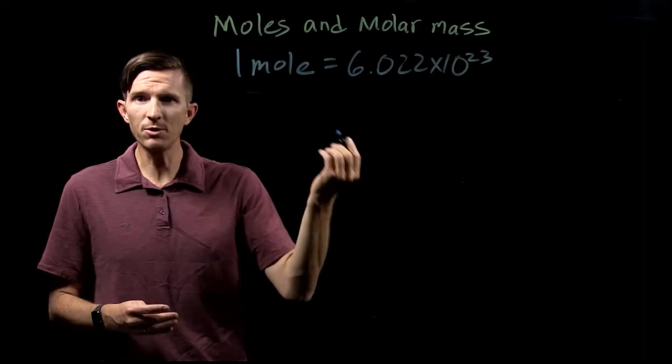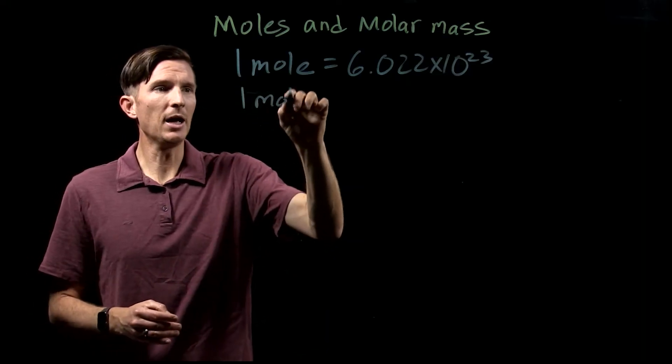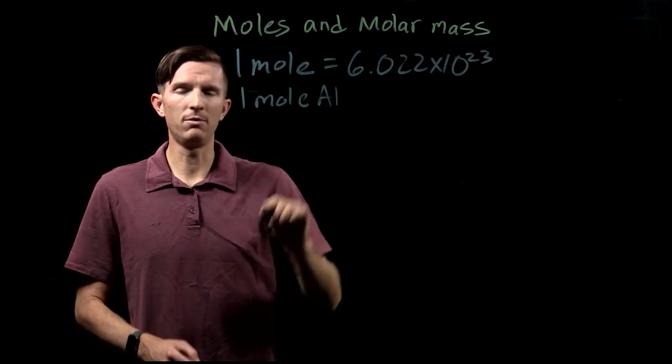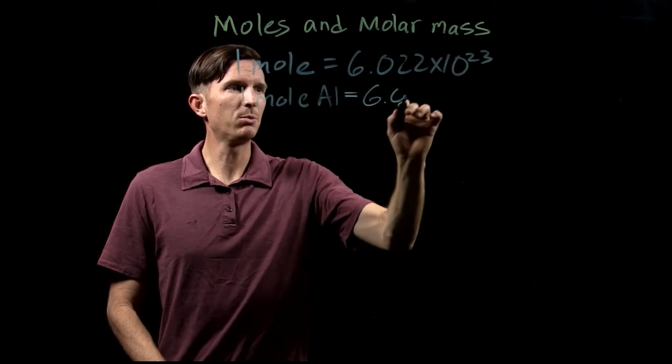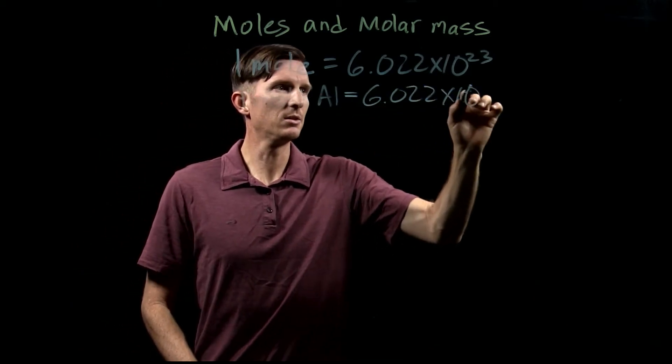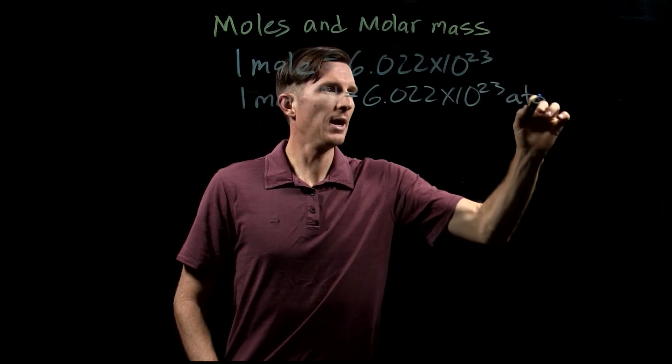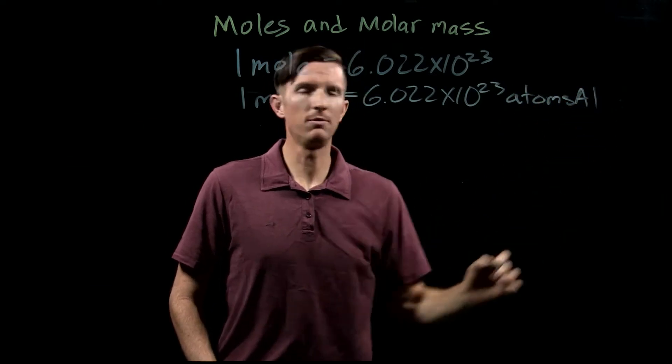For example, if I were to say I have a mole of aluminum, that means I have 6.022 times 10 to the 23rd atoms of aluminum.